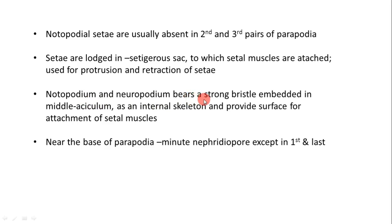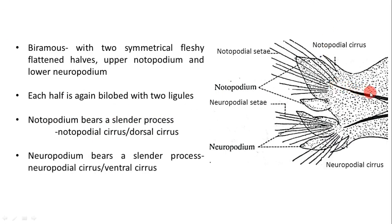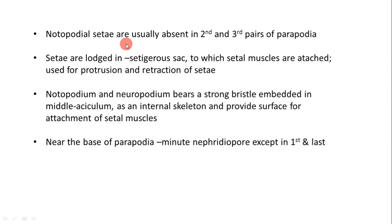Embedded in the middle of each lobe — both notopodium and neuropodium — is a strong thick bristle called the aciculum. The aciculum acts as the internal skeleton of the parapodium, providing a surface for attachment of setal muscles. It provides strength to the parapodium.